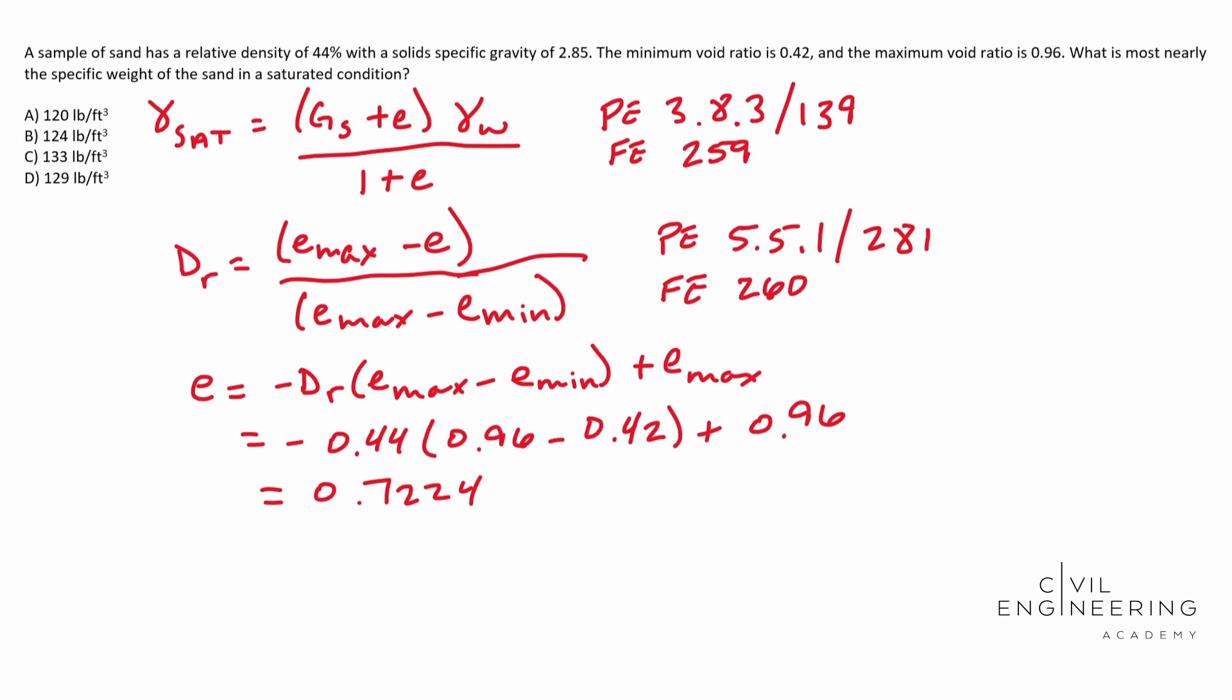If it asked for E, if it asked for our void ratio, that's going to be our final answer. But since we're using this in an equation later in our gamma sat, we need to use all four significant digits here. So these are all very important when it comes to rounding. So we're going to use that entire deal.